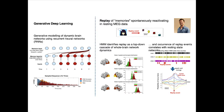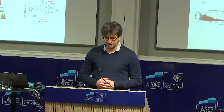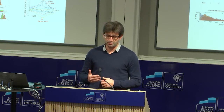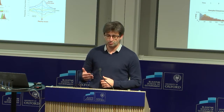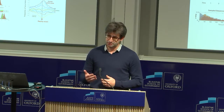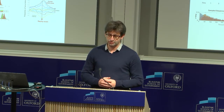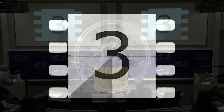On the right-hand side is an example of recent work by Cam Higgins in our group. He's looking at using MEG to understand replay of memories and how they spontaneously reactivate in ongoing resting MEG data. He used the hidden Markov model to identify replay in the resting state, and showed that these replays occur in a top-down cascade of whole-brain network dynamics — actually in reverse compared to when the memory is being encoded. These replay events also strongly co-occur with the resting state networks we normally look at.